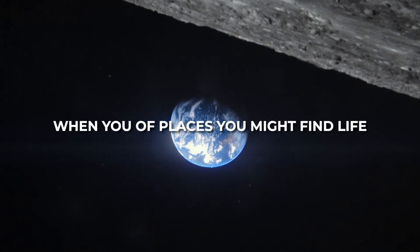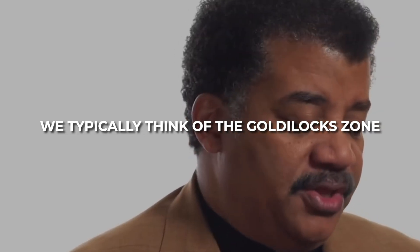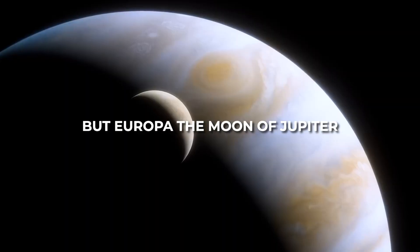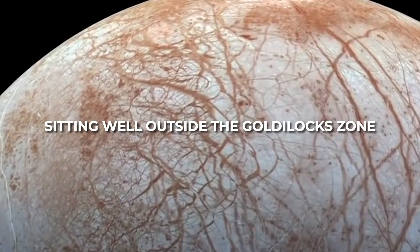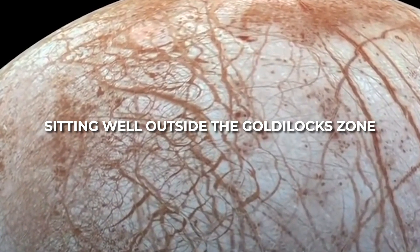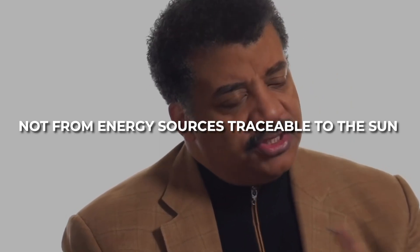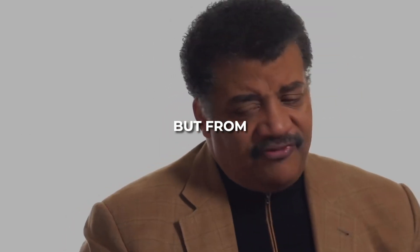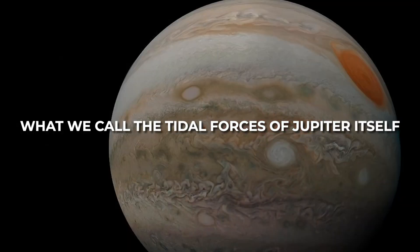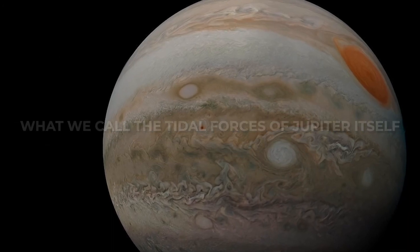When we think of places you might find life, we typically think of the Goldilocks zone. But Europa, a moon of Jupiter sitting well outside of the Goldilocks zone, is kept warm not from energy sources traceable to the sun, but from what we call the tidal forces of Jupiter itself.